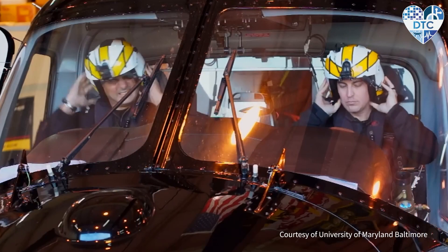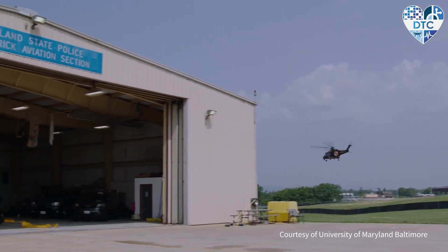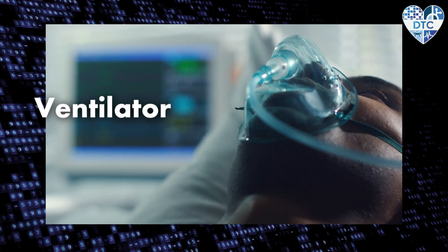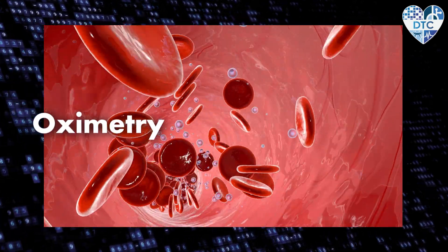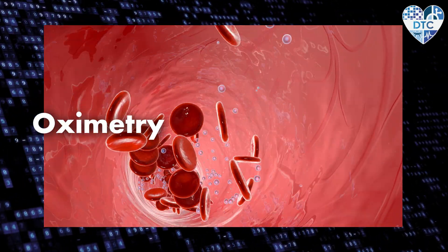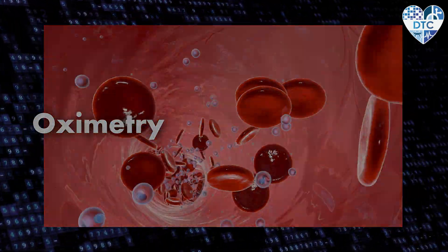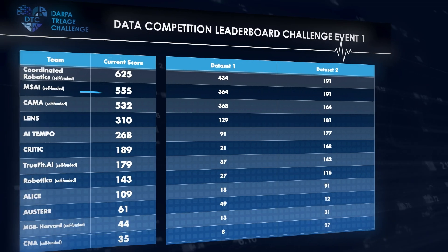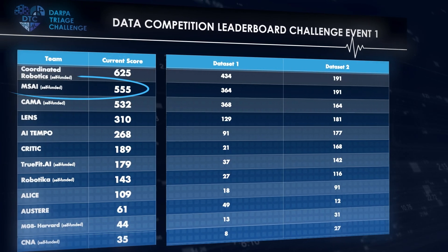In future years of the competition, training data will go beyond the current standard of care to include pupillometry, ventilator data, and tissue oximetry to improve prediction of life-saving interventions. And now here are the results from the data competition challenge event number one.